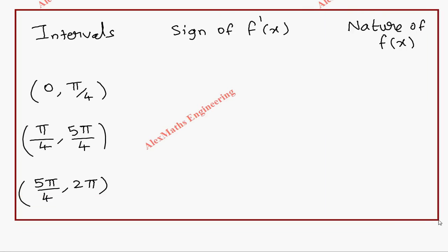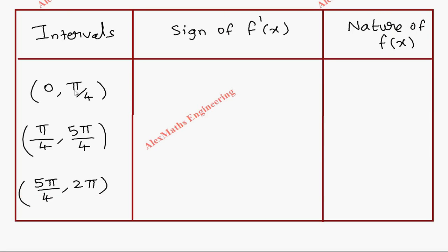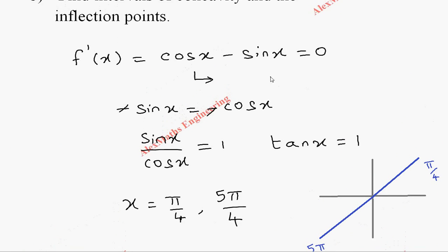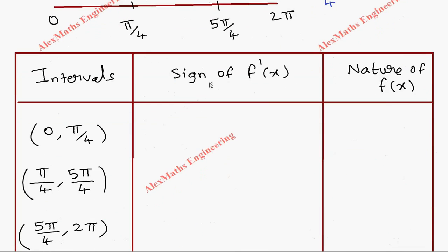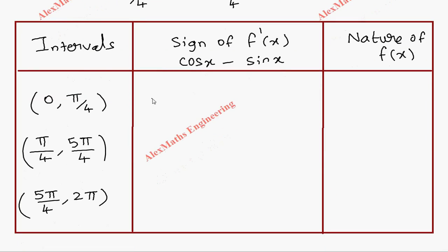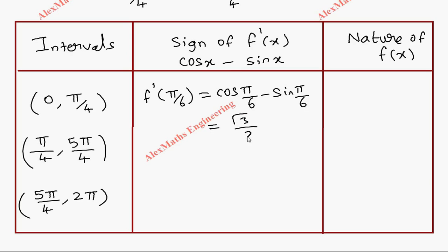We set up a table with intervals and the sign of f'(x) to determine the nature of f(x). We pick a value in each interval and substitute into f'(x) = cos x − sin x. For the first interval, taking x = π/6, we get cos(π/6) − sin(π/6) = √3/2 − 1/2, which is greater than 0.